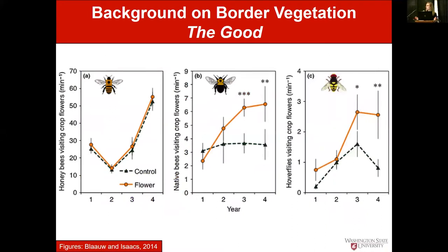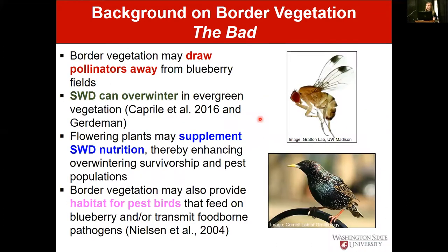Looking at highlights from Dr. Isaacs' program: this slide shows three figures. The first is honeybee visitation on the blueberry crop — there was no difference in honeybee visitation across the two treatments. But when looking at native bees and hoverflies, which also pollinate blueberry flowers, by years three and four there was a significant increase in their visitation in fields adjacent to these wildflower plantings.